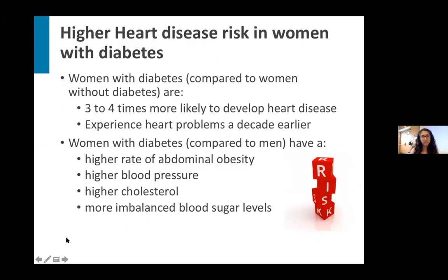There may also be differences by biological sex. If we pay particular attention to women living with diabetes, population-based studies tell us that women with diabetes compared to women without diabetes are more likely to develop heart disease — as high as four times more likely, which is double the risk for men. They may experience heart problems a decade earlier. Women may typically develop heart disease in their 60s or 70s, but women with diabetes may have heart problems in their 50s or 60s. Women with diabetes compared to men may have a higher burden of risk factors including higher levels of blood pressure, cholesterol, extra weight and fat around the middle, and more imbalanced blood sugars.